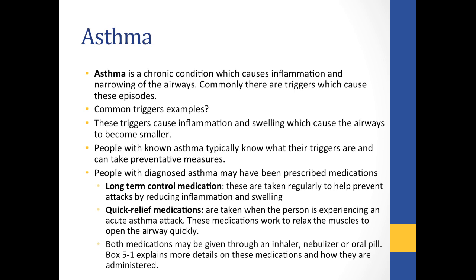Asthma often results in respiratory distress and can result in respiratory arrest. Asthma is a chronic condition in which inflammation creates a narrowing of the airway. You just need to understand that it causes inflammation and narrowing of the airway, and whenever we have narrowing of the airway, breathing becomes difficult. Asthma attacks can be triggered by various things.